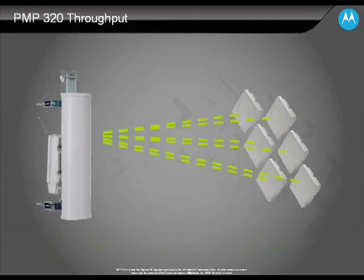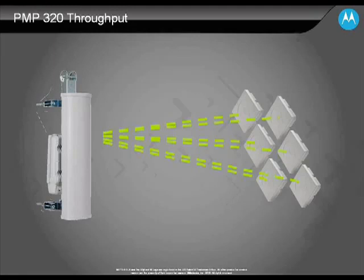The PMP320 is a high throughput platform offering up to 45 megabits per second in a particular sector. To achieve 45 Mbps, you need specific configuration settings: a 10 megahertz channel, a 75-25 uplink-downlink ratio, and best effort service flows. Five and seven megahertz channels are also available.